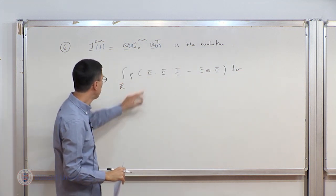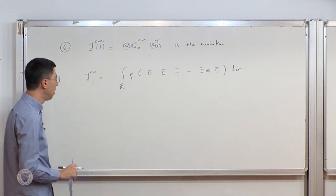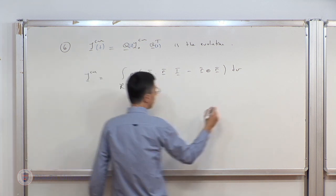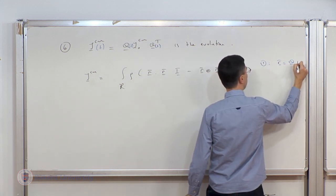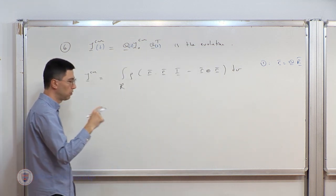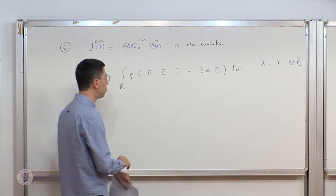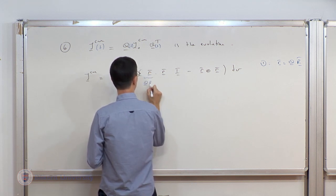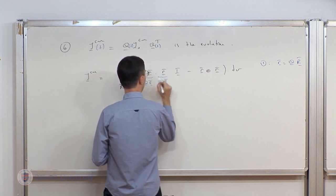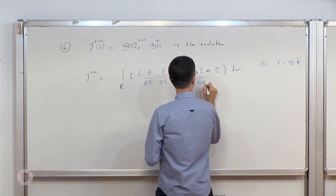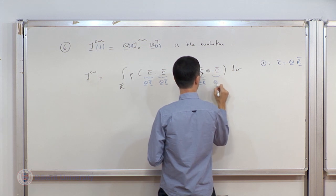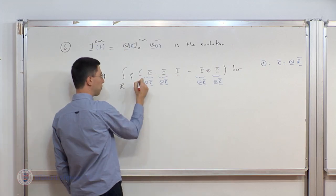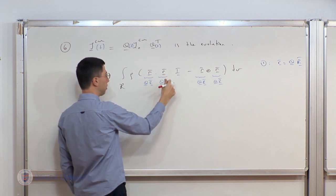If you're looking at any other point, you would substitute the relative position vector with respect to that point. Now, what we showed earlier is that r-bar equals Q times capital R-bar — in other words, the relative position vector of a material point with respect to the center of mass is subject to pure rotation. So I can plug in Q*R-bar in each occurrence, and pull this integral back onto the reference configuration because I have referential quantities appearing there.